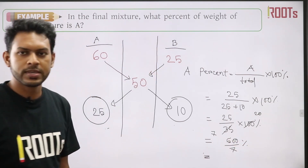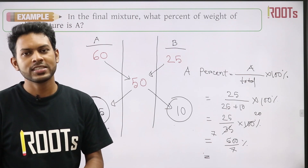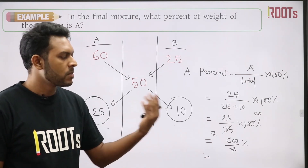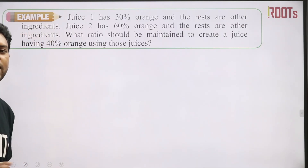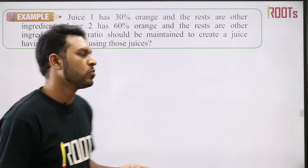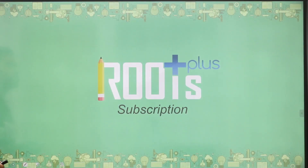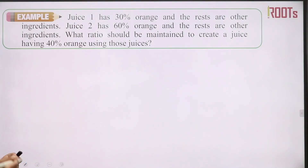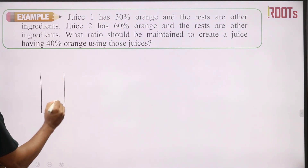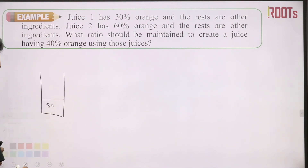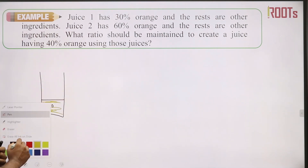Let's do the math easy and 100% clear. Juice 1 has 30% orange and the rest are other ingredients. Juice 2 has 60% orange and the rest is 40%.